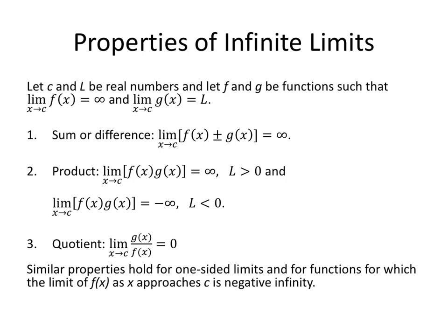Some properties of infinite limits. Arithmetic with infinity can be a little challenging at times. So let's let c and L be real numbers, and let f and g be functions, such that the limit as x approaches c of f(x) = ∞, and the limit as x approaches c of g(x) = L. So infinity for the limit of f, a real number for the limit of g. Infinity plus or minus a number, still going to give us infinity. The product, the limit as x approaches c of f(x)g(x). If the limit L is positive, infinity times a positive number will be positive, and infinity times a negative number, if your limit for g is negative, we'll get negative infinity.